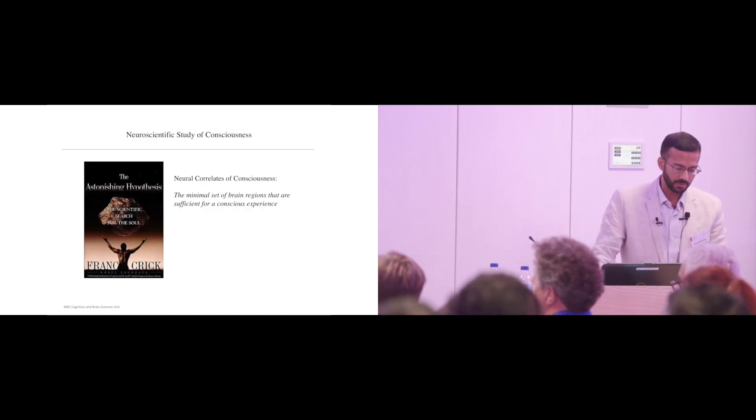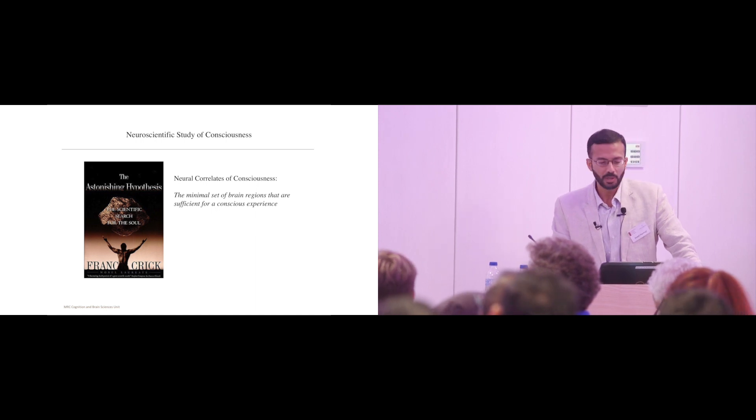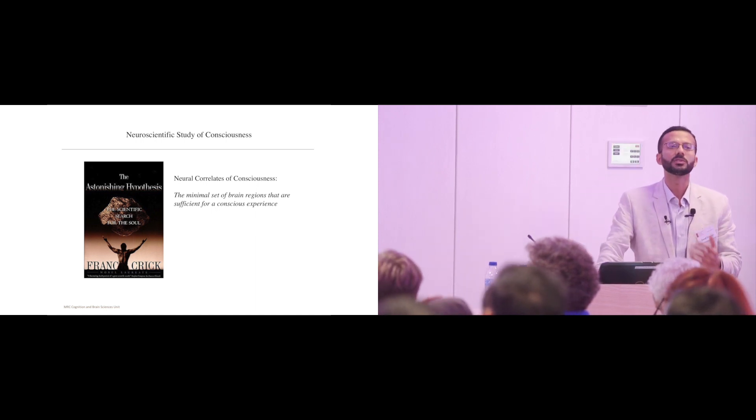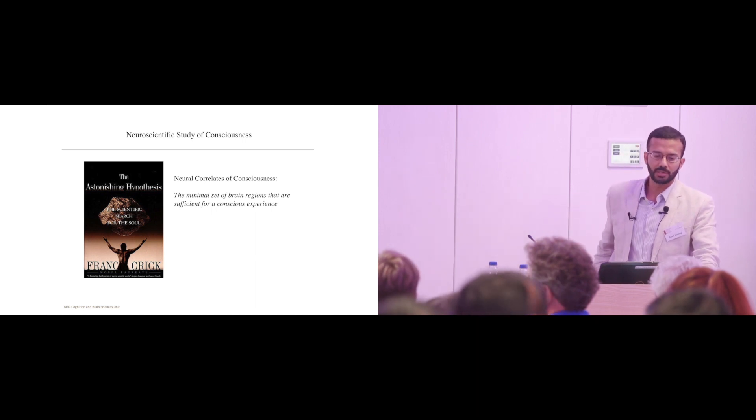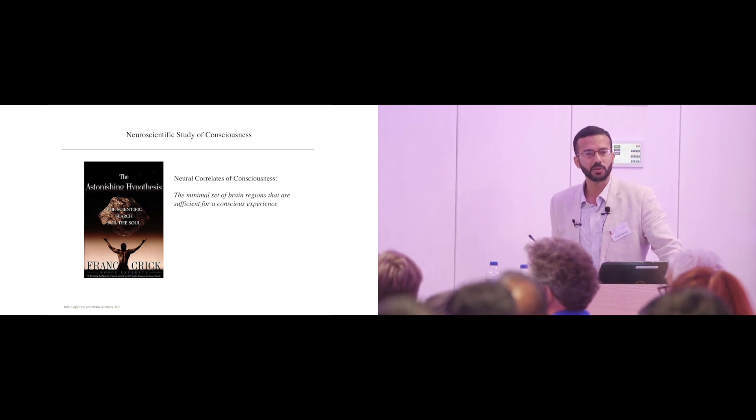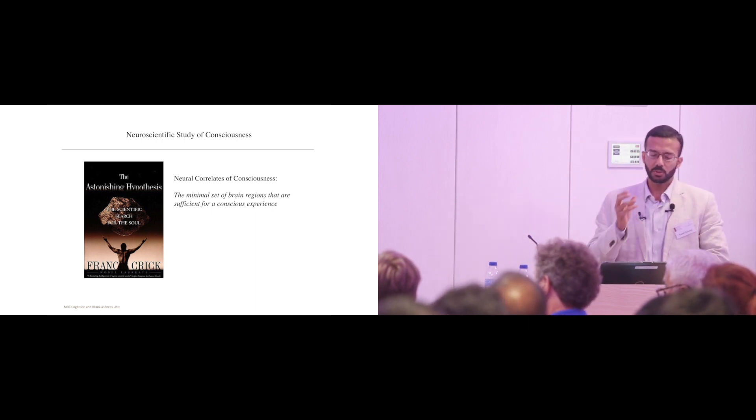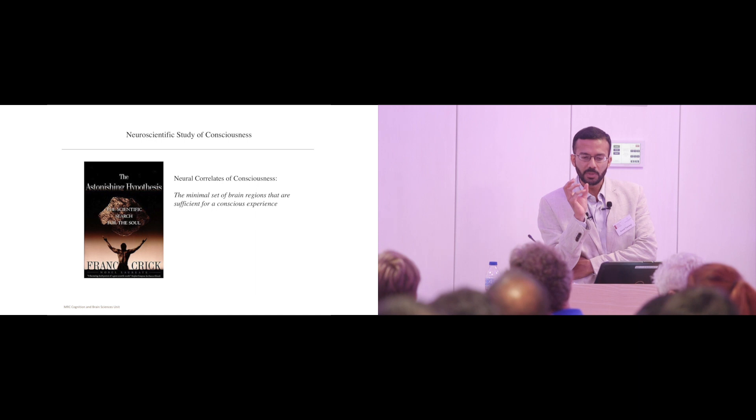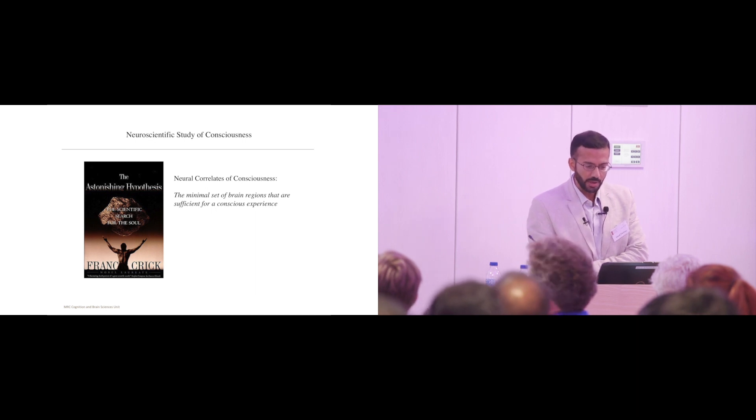Francis Crick in his papers, and more popularly in this book, popularized the notion of neural correlates of consciousness, which has generated a program of research for the past at least 25 years. The issue here is: let's find the minimal set of regions that are correlated only with conscious experience and nothing else. Why?